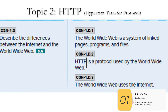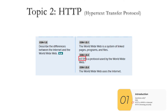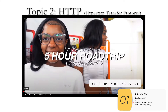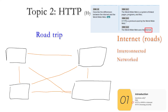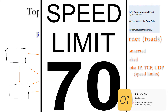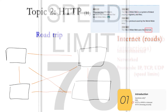For the APCSP exam, you will need to distinguish between HTTP, the internet, and the World Wide Web — they are not the same thing. To show the difference, I like to think of it as a road trip, where the internet is like the roads between different places. The words you're going to want to know are 'interconnected' and 'networked' — if you see these words, think internet. The internet will use protocols: IP, TCP, and UDP. You can think of these like the speed limit, some sort of rules that must be followed.